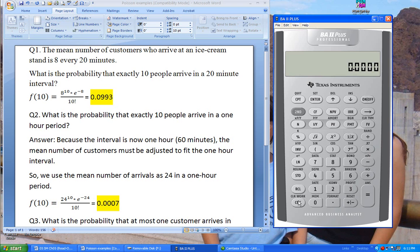Another example. What is the probability that exactly 10 people arrive at the ice cream store in a one hour period? Here's a common mistake that students make. Because now we're looking at a one hour period, we need to adjust that 8, which was for every 20 minutes. We need to adjust it so that it fits a one hour period. So because the interval is now one hour or 60 minutes, the mean number of customers must be adjusted to fit the one hour interval.